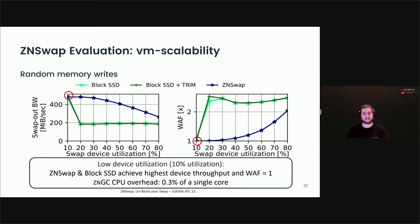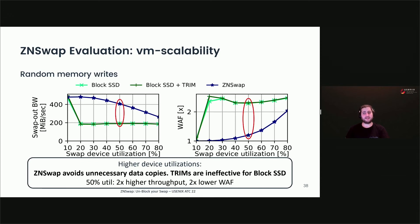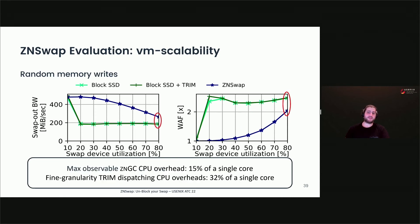Our host-side GC exhibits only a 0.3% single-core CPU overhead at low utilization. At 50% utilization, ZNSwap outperforms the traditional SSD by a factor of two, along with two times lower write amplification — achieved due to ZNGC's ability to avoid unnecessary data copies. Native trim support does not have any measurable effects on either metric. The maximum CPU overhead observed for ZNGC is 15% of a single CPU core even at very high device utilization. Enabling fine-granularity trims at high device utilization exhibited 32% CPU overhead, which is twice as much as ZNGC's, but unlike ZNGC it has no observable write amplification gains.